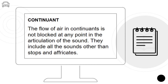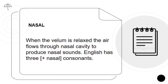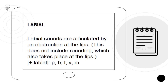Continuant: the flow of air in continuants is not blocked at any point in the articulation of the sound; they include all sounds other than stops and affricates. Nasal: when the velum is relaxed, the air flows through the nasal cavity to produce nasal sounds. Labial: labial sounds are articulated by an obstruction at the lips — this does not include rounding, which also takes place at the lips. Examples are p, b, f, v, and m.